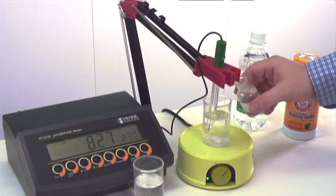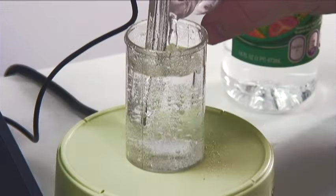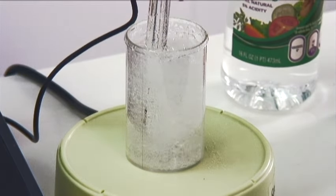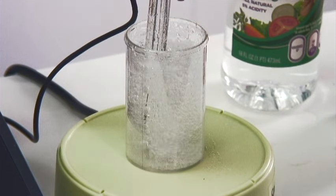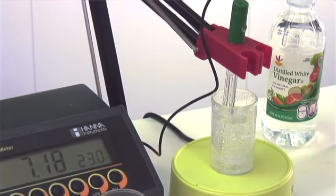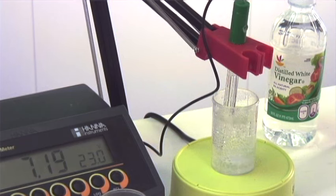pour some of the vinegar directly in. We can see the carbon dioxide fizzing off. We've added a significant amount of vinegar, and there's still only a slight change in pH. It's dropped just over 1 pH unit.